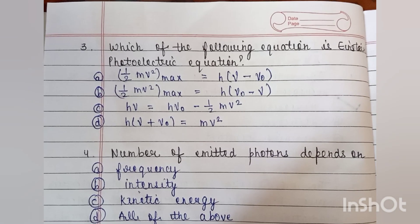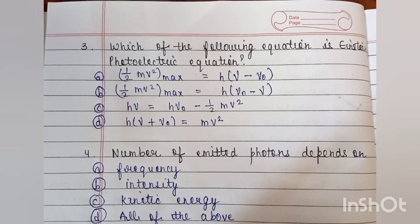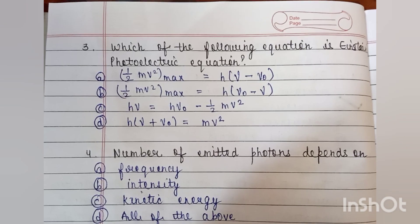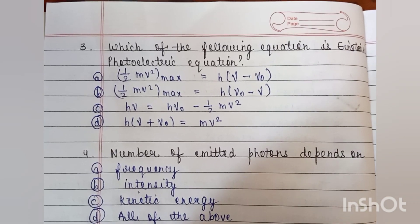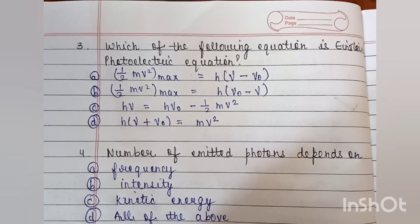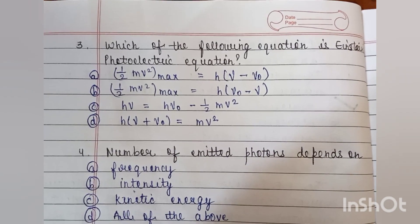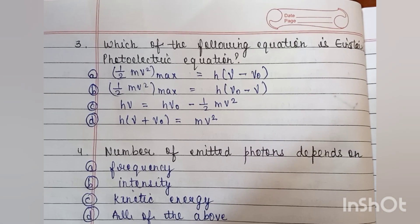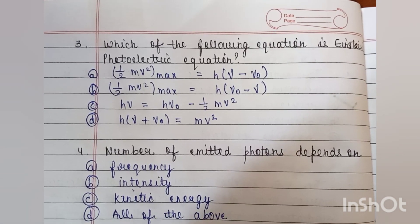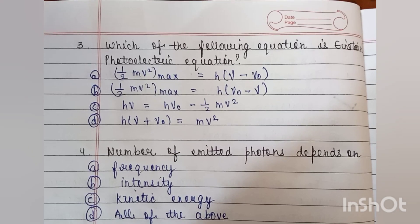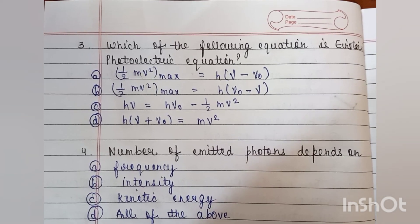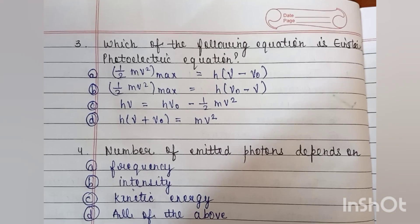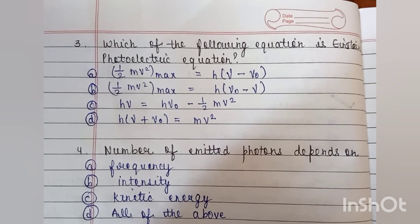Question number 3: which of the following is Einstein's photoelectric equation? Options: (A) ½mv²_max = hν − hν₀, (B) ½mv²_max = hν₀ − hν, (C) hν = hν₀ − ½mv², (D) hν + ν₀ = mv². The correct answer is A.